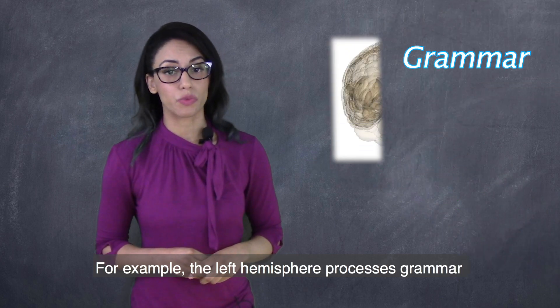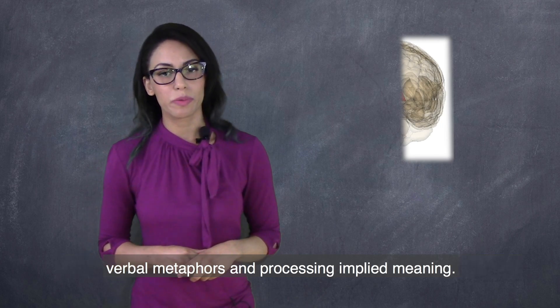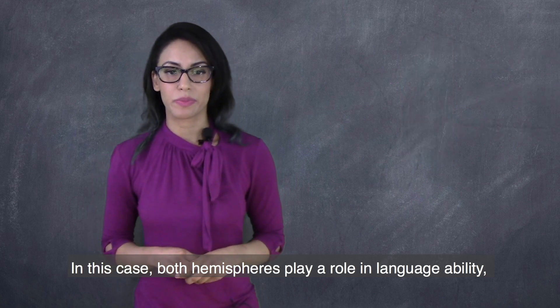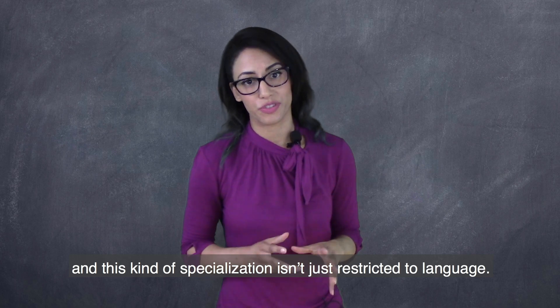For example, the left hemisphere processes grammar and literal meaning. Alternatively, the right hemisphere is responsible for understanding verbal metaphors and processing implied meaning. In this case, both hemispheres play a role in language ability, and this kind of specialization isn't just restricted to language.